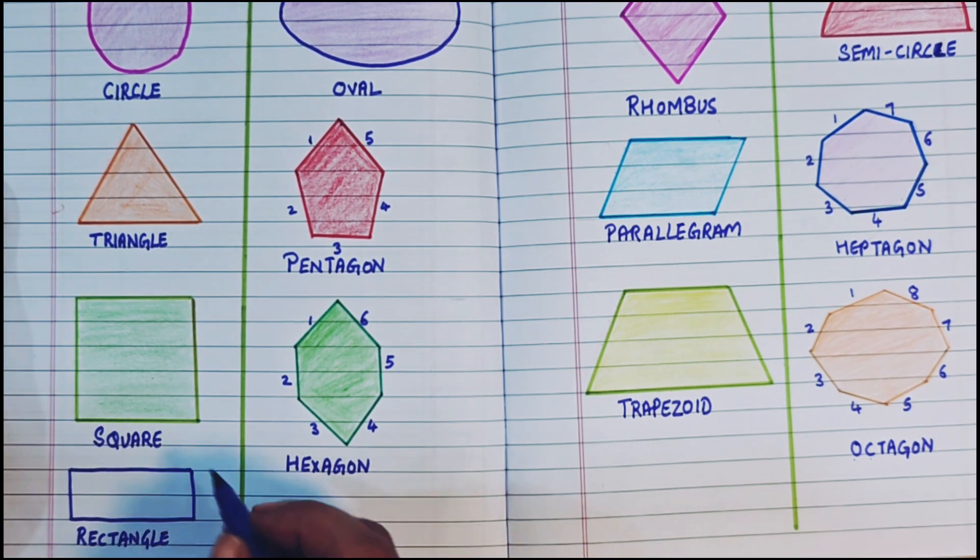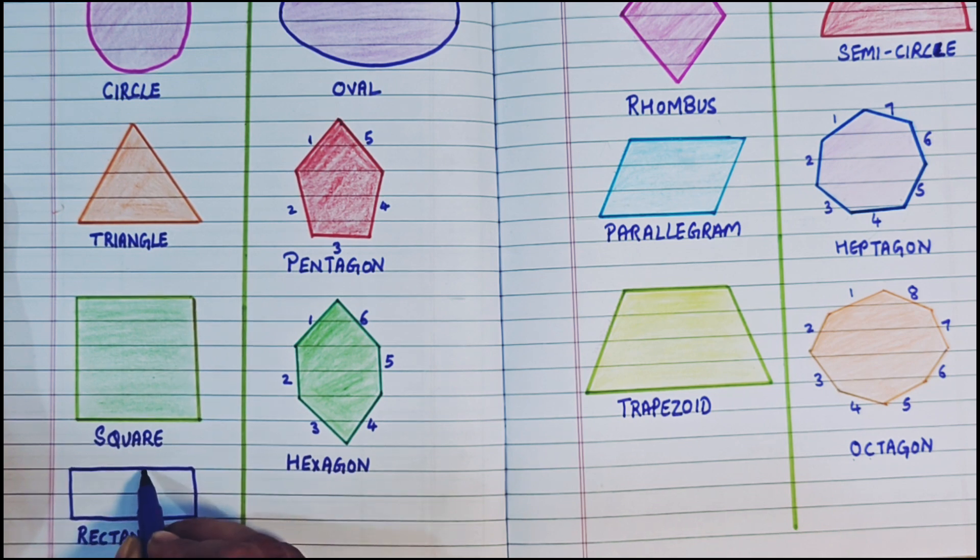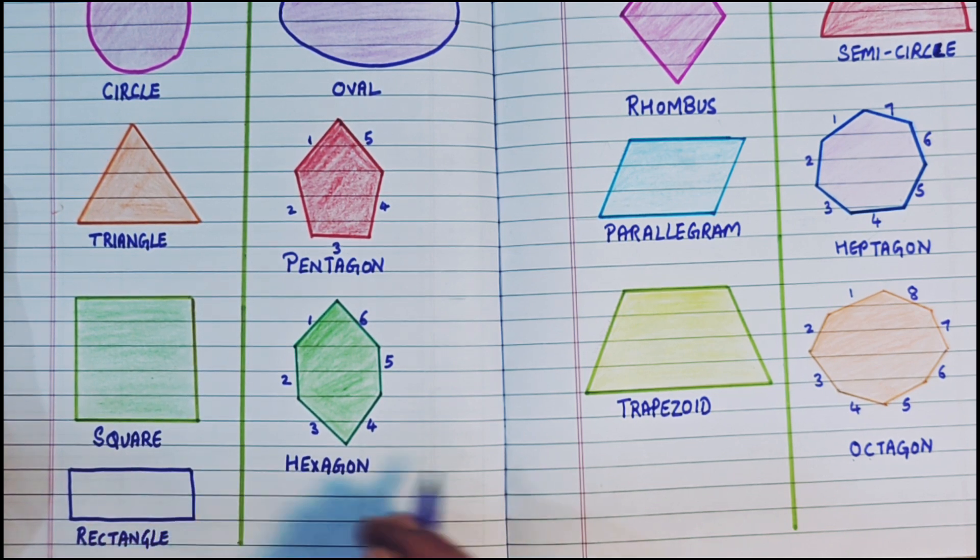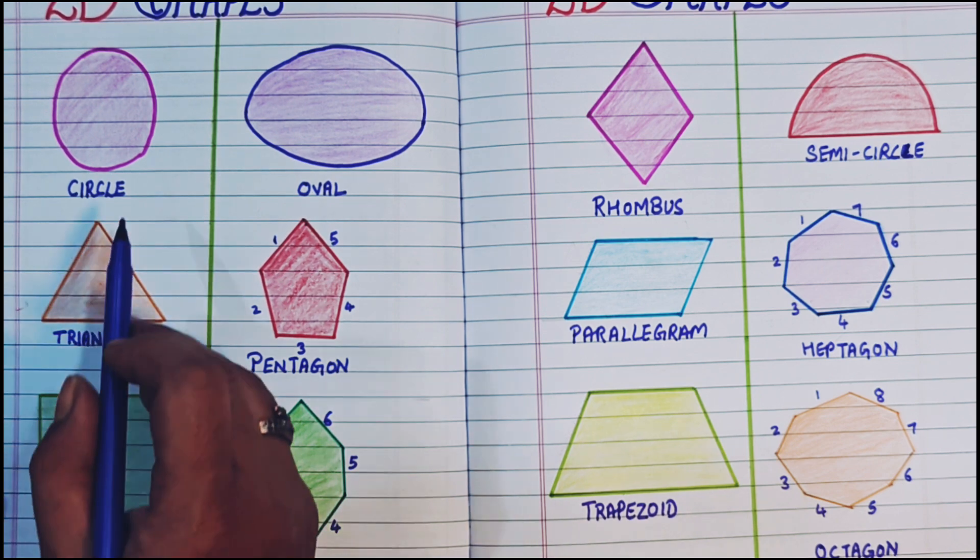In this, what is the difference from square? In this, 2 sides are smaller than the other 2 sides.